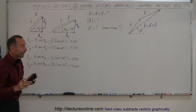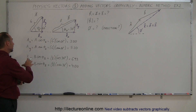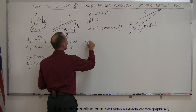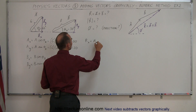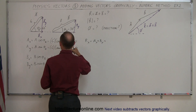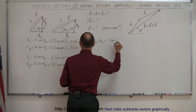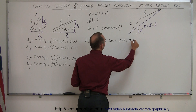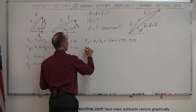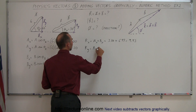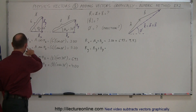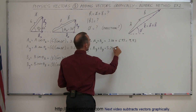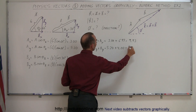We've now found the x and y components of both vectors A and B. Adding them together: R sub x, the x component of the resultant, equals A sub x plus B sub x — that's 3.00 plus 6.93, which equals 9.93. For the y component of the resultant: R sub y equals A sub y plus B sub y — that's 5.20 plus 4.00, which equals 9.20.